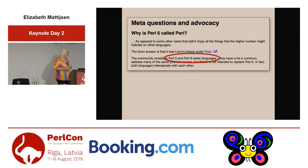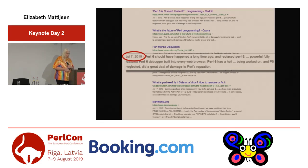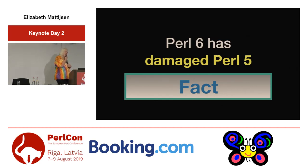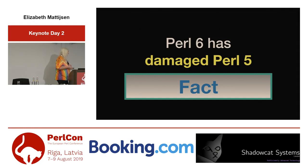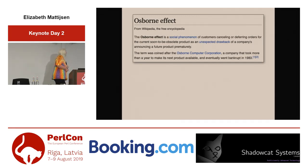And this is the last myth I'm going to treat here: Perl 6 has damaged Perl 5. This myth is still very true — but actually I think this myth is not a myth, it's a fact. One of the best examples is the Osborne effect: basically announcing something new so that people stop using the old and then not delivering the new. That's killing. And I actually used an Osborne 1 way back in the day — this is so much lighter.